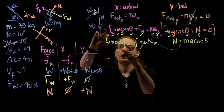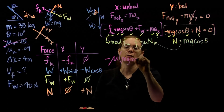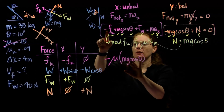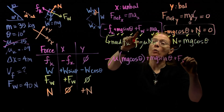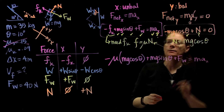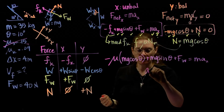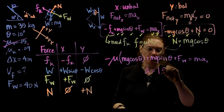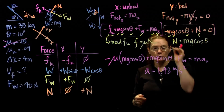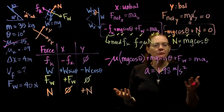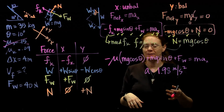Rewriting the x equation with everything substituted: negative mu times mg cosine theta, plus mg sine theta, plus the force of the water equals ma. At this point I know everything but the acceleration. When I did the math, I got 1.98 meters per second squared. That seems reasonable — about a fifth of gravity. So we're going slower than pure free fall, which we have to be, and it's not too fast.